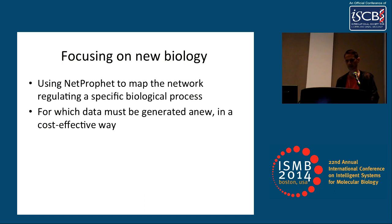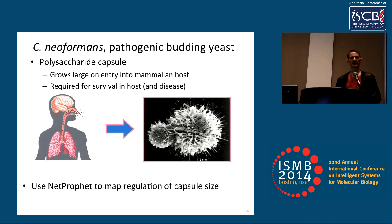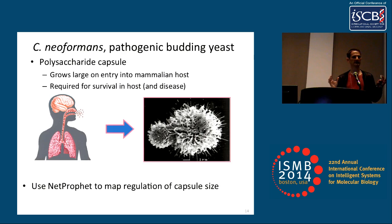Now I want to shift gears and tell you about how NETPROFIT can be applied to map the network regulating a specific biological function, in a scenario where you have to generate the gene expression data yourself. We collaborated with the Tamara Deering lab to study regulation of the polysaccharide capsule size of a pathogenic fungus called Cryptococcus neoformans. Cryptococcus has a capsule that is small when living in the environment, but when it enters a mammalian host the capsule grows large — and it must grow large to maintain the infection, making the capsule a critical virulence factor.